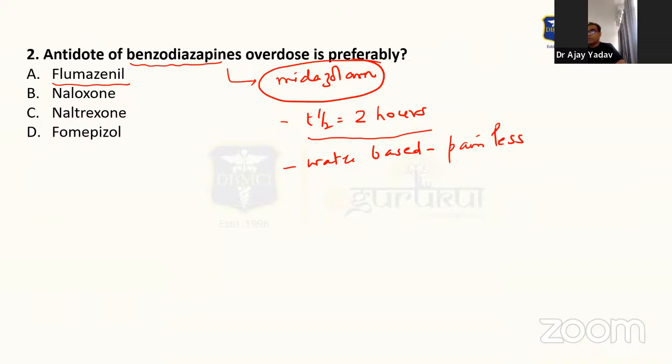And as I mentioned, that flumazenil is the specific antagonist for benzodiazepine poisoning. Naloxone, naltrexone, these are opioid antagonists. Naloxone being short-acting while naltrexone being long-acting.